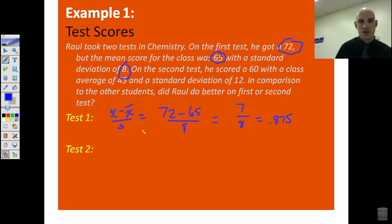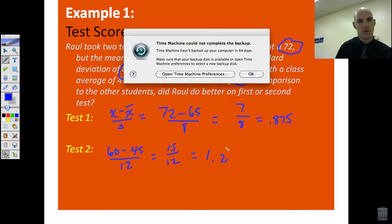Test number two. He scored a 60, so this is his score, 60 minus 45 over standard deviation of 12. So, this is going to be 15 over 12, which is 1.25.